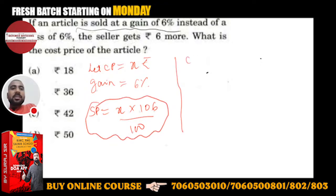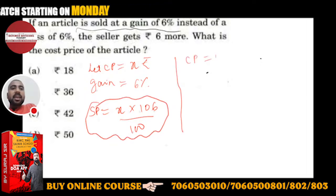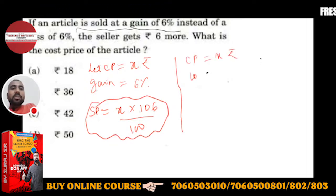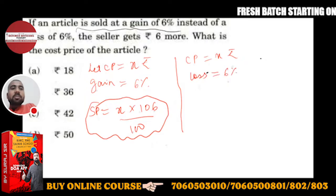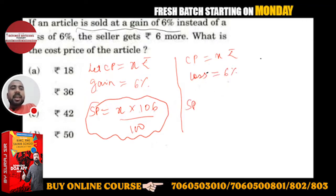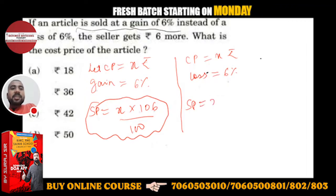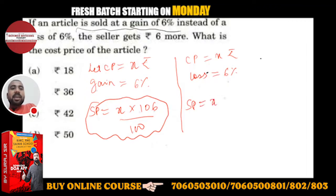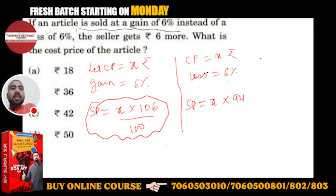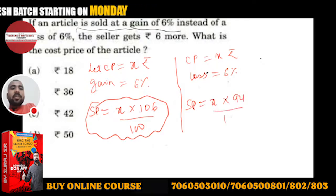Doosra case: CP = X hai, aur agar aap 6% loss mein bechte ho, to SP kitna jayega? SP = (94/100) × X. Yeh SPL hai — loss wala SP.